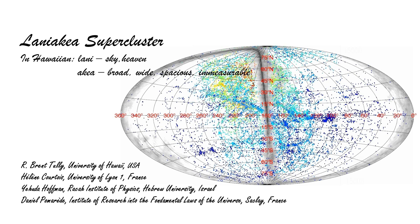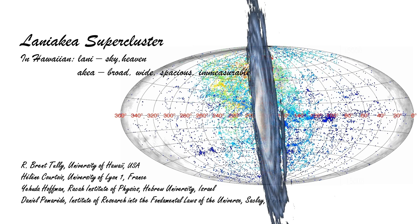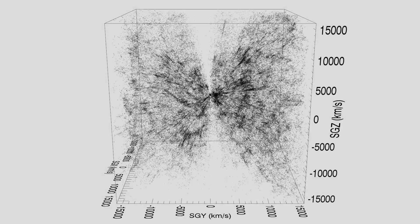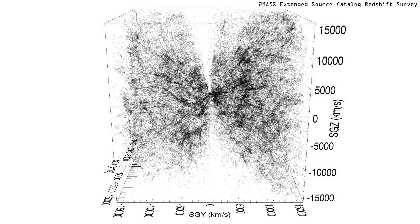Let's embark on the discovery of our home supercluster Laniakea. All colored dots in this scene are galaxies belonging to this large structure as seen from Earth. We live in a beautiful large blue spiral galaxy, just one of many in this small universe volume of size 32,000 km per second on a side.